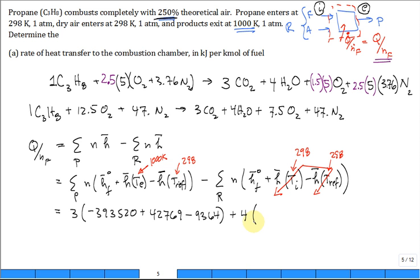We add to it the number of moles of water vapor, 4. The enthalpy of formation for water vapor, negative 241,820. Plus the enthalpy at 1000, 35,882.